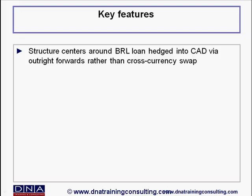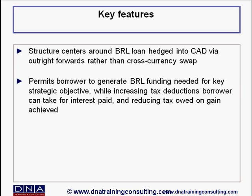The weak currency debt structure centers around a loan in Brazilian Reals hedged into Canadian dollars via the use of outright forwards rather than a cross-currency swap. The structure permits the borrower to generate Reals funding needed for a key strategic objective, while increasing the amount of tax deductions the borrower can take on account of the interest it pays, and simultaneously reducing the tax it owes on a certain gain it achieves under the structure.